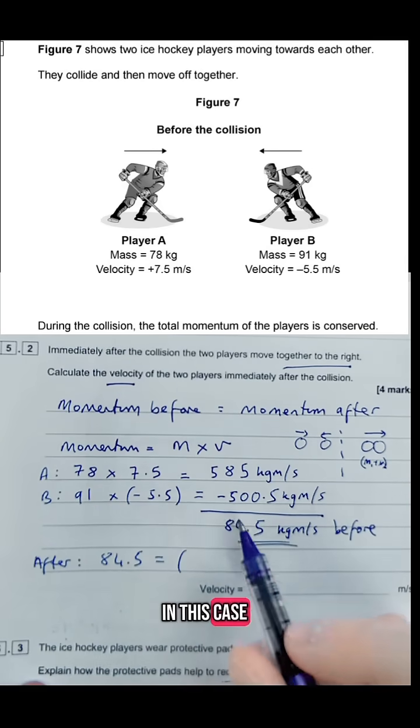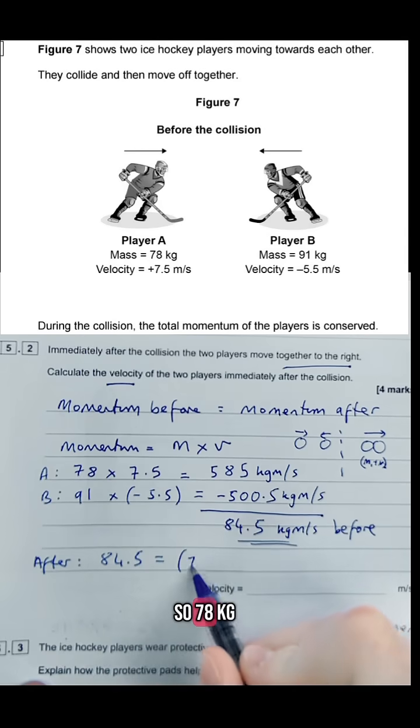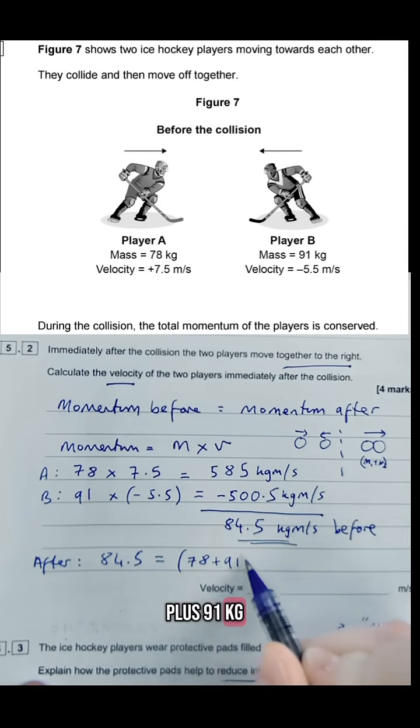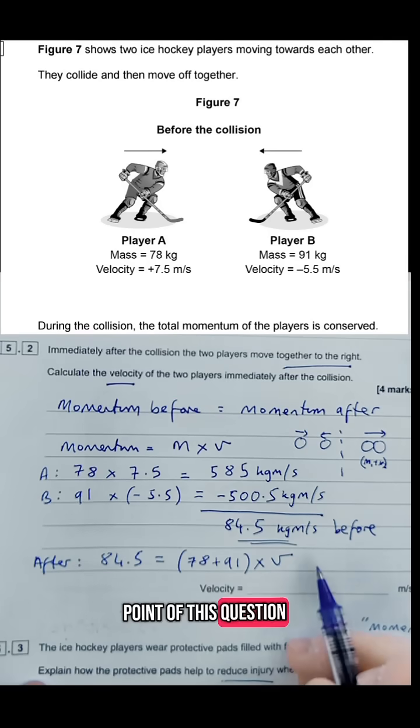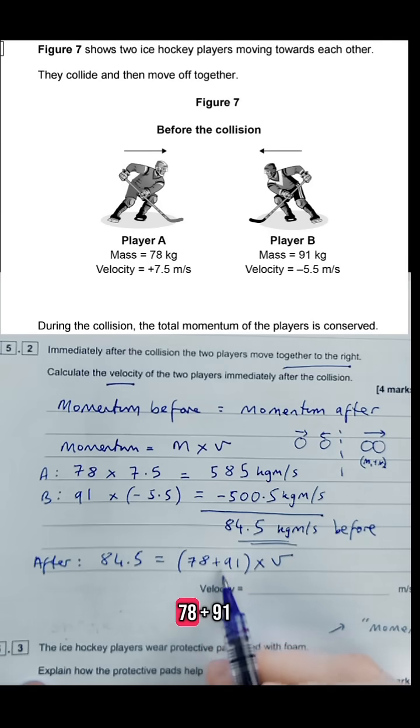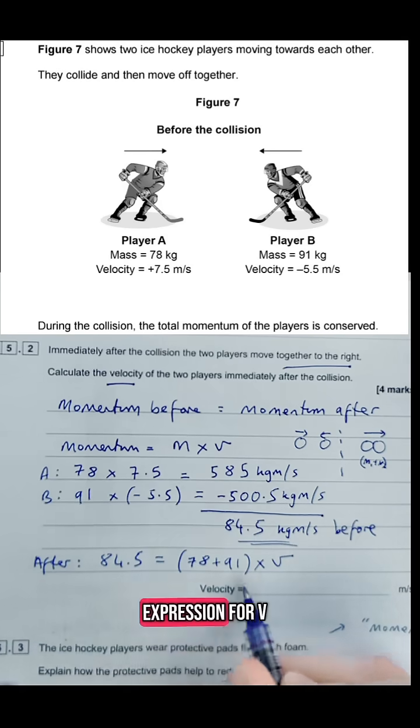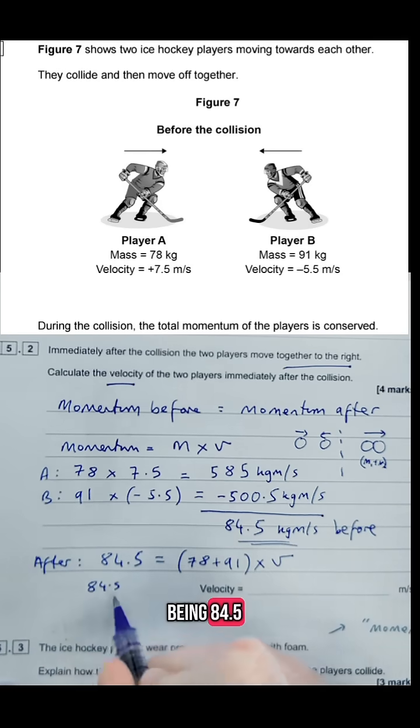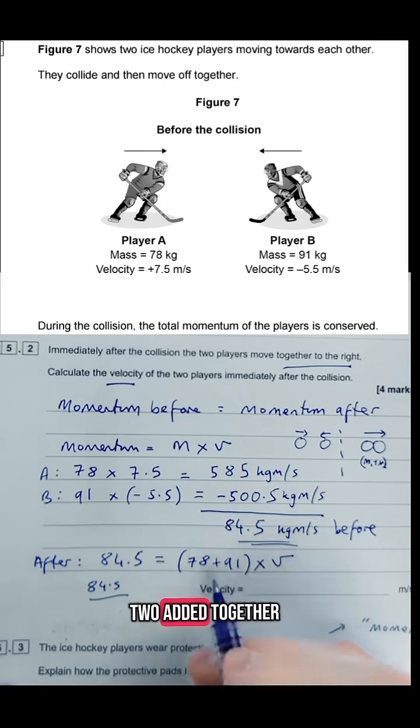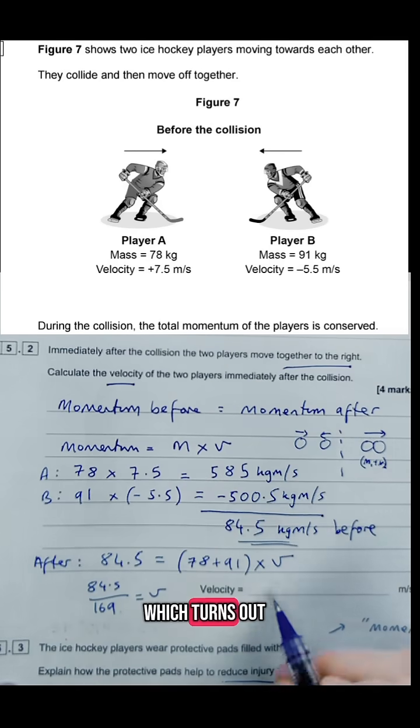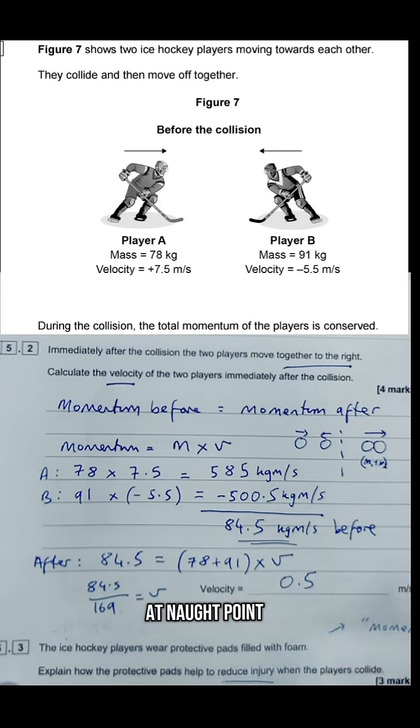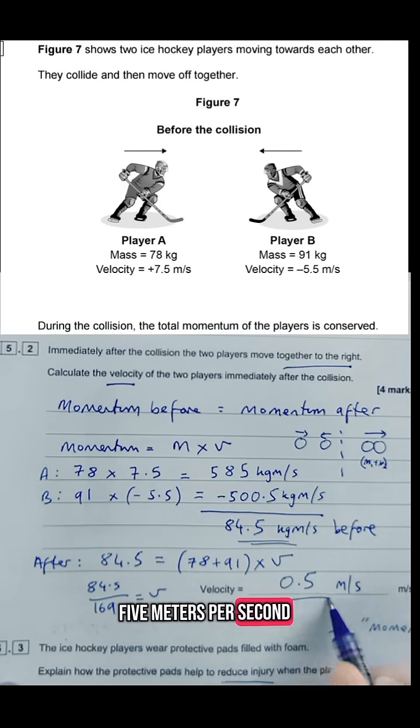And the mass in this case is the two masses added together. So 78 kg plus 91 kg times by the velocity which we're trying to find. That's the whole point of this question. So if you add together 78 plus 91, we're going to come up with our expression for v being 84.5 divided by those two added together which is 169, and that's going to give us our velocity which turns out to be a quite nice round number, 0.5 meters per second for this question.